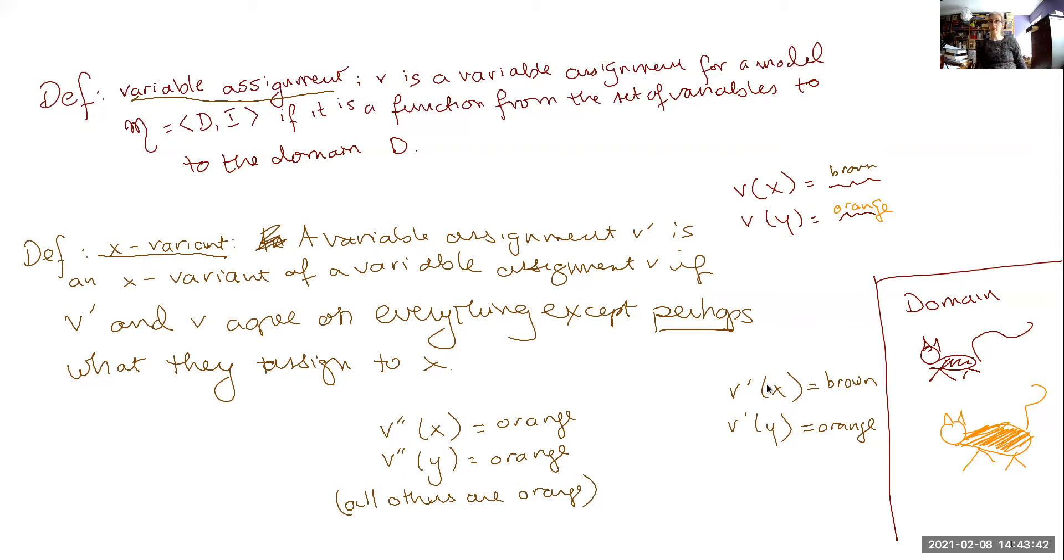Now, v prime is a variant of both, v double prime is a variant of v prime and of v with respect to x.